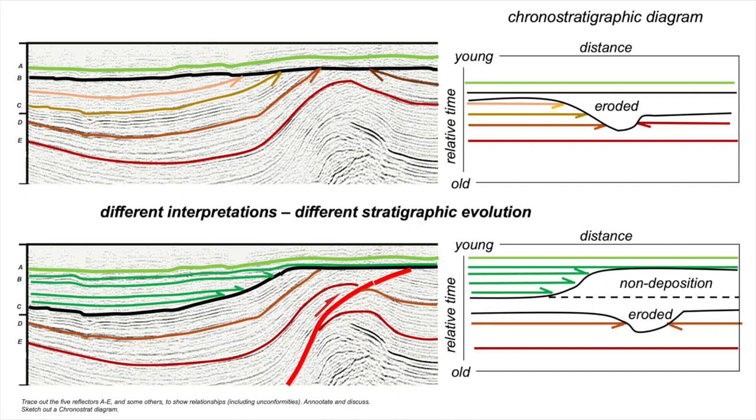So we have different interpretations and they imply different stratigraphic evolutions. Choosing between these is difficult. They both work. Certainly the lower one creates a more complicated history, but it doesn't mean that it's less likely. In a regional geological investigation, we could take these two and test them against other profiles and other interpretations that we make in adjacent areas.